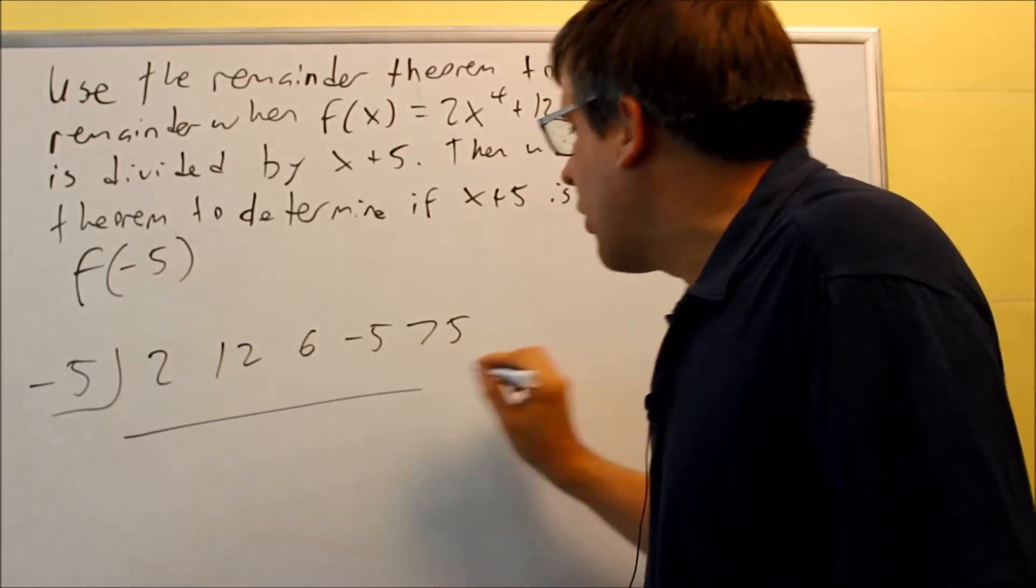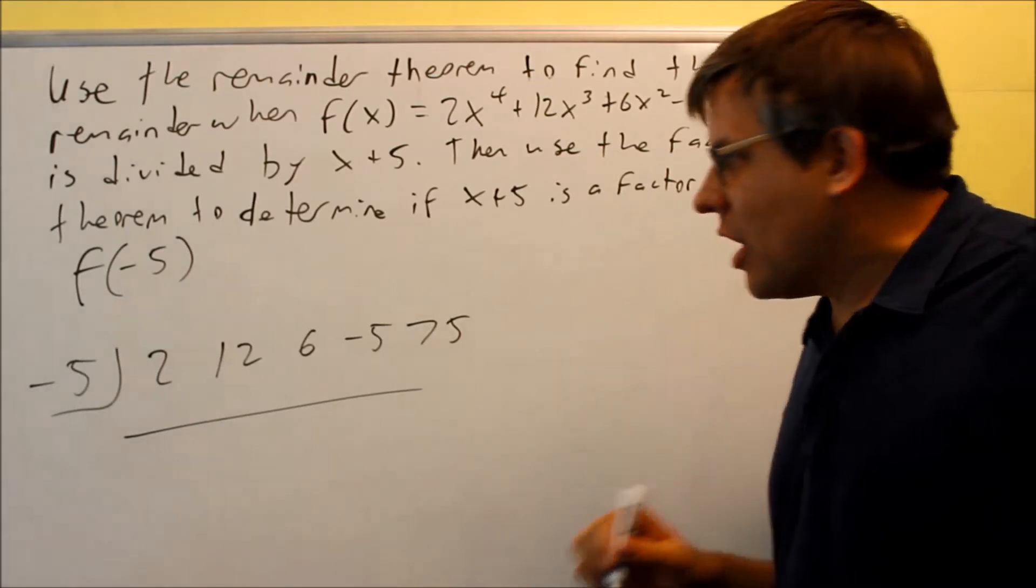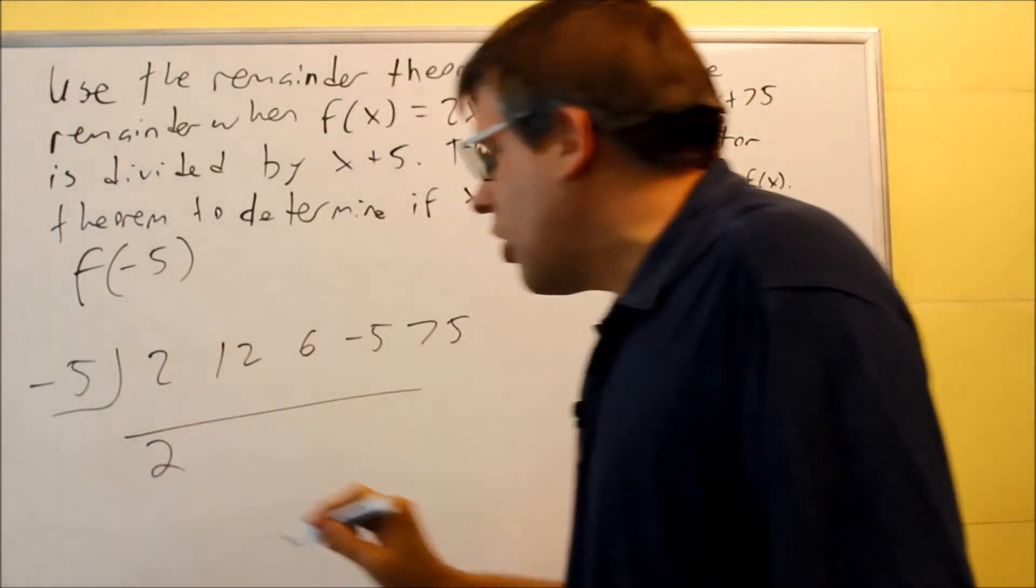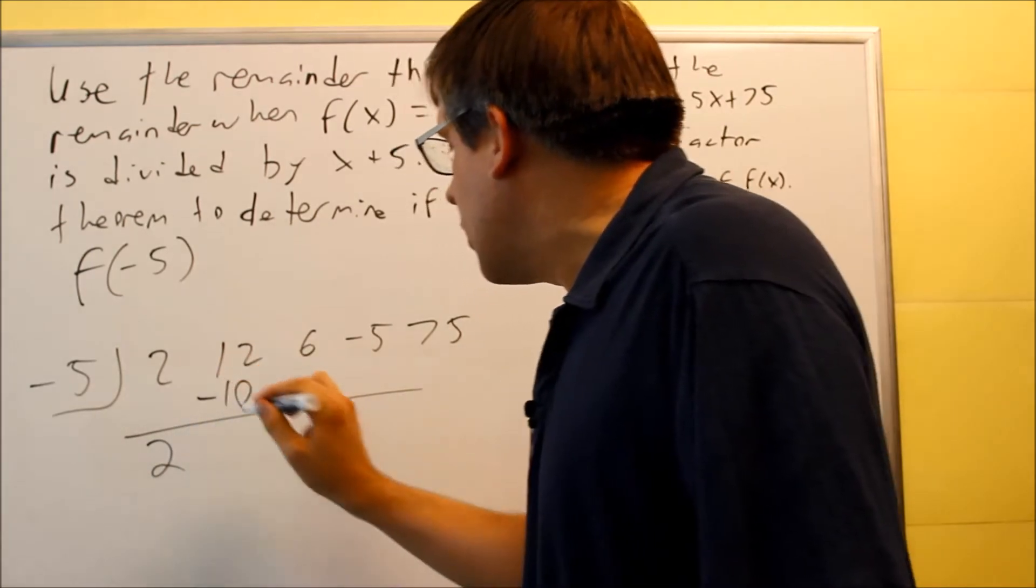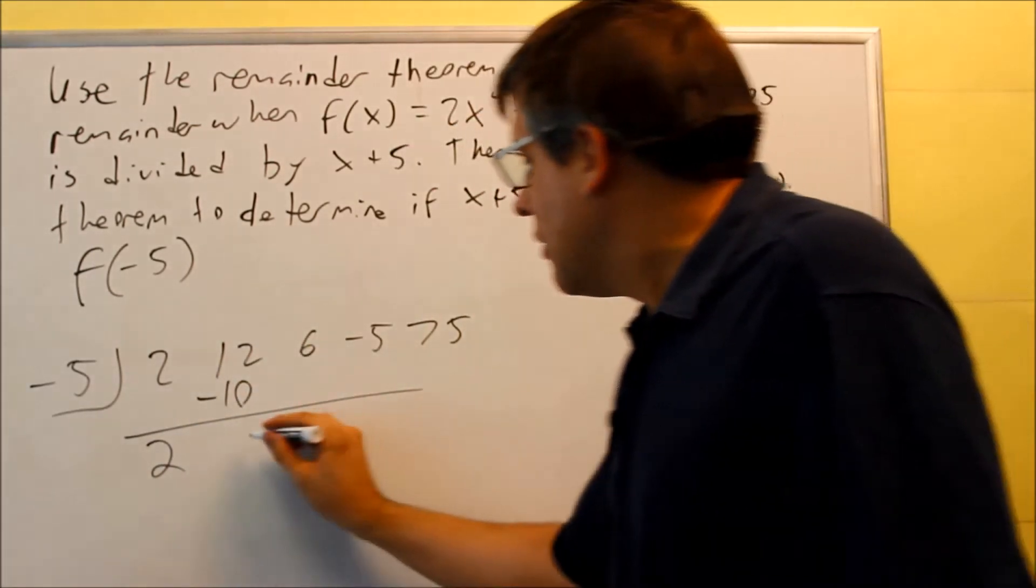And we get that. Now we're going to go through the synthetic division steps. We drop the 2 down automatically. Multiply these. Negative 10 goes underneath the next column. And we do adding. So we get 2.